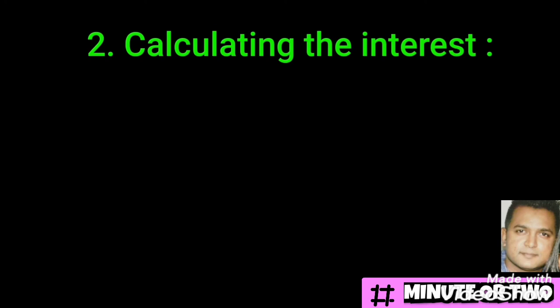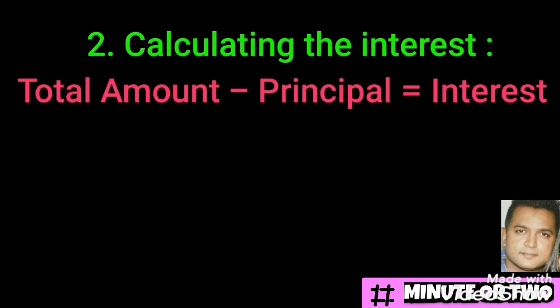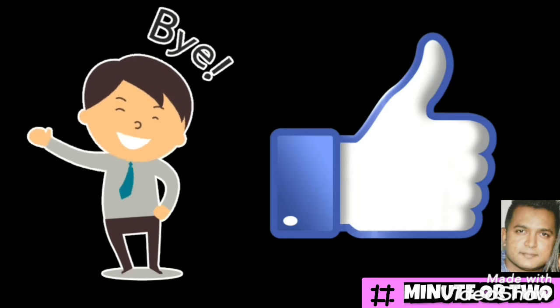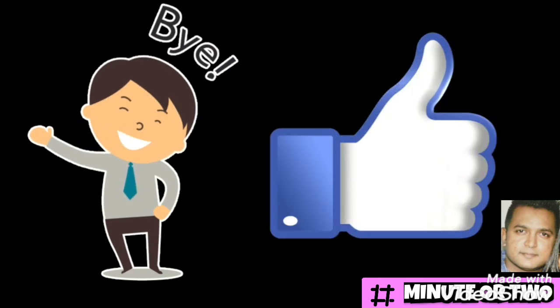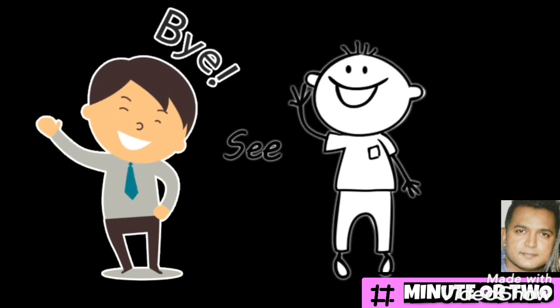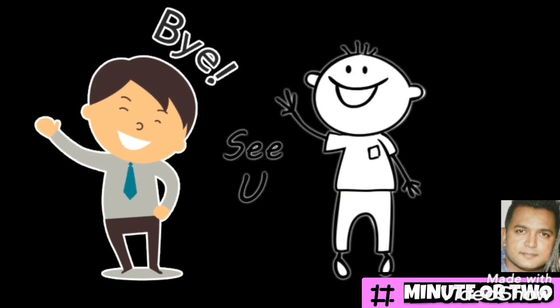The second type of question is the calculation of the interest only. To do this, take the total amount we already worked out minus the principal of fifteen thousand, and you'll get the interest accumulated over three years. The total amount was seventeen thousand two hundred and fifty, minus fifteen thousand, gives you two thousand two hundred and fifty. These videos are made short so you remember the concept and can apply it to more difficult questions. Thank you for joining me and have a blessed day.